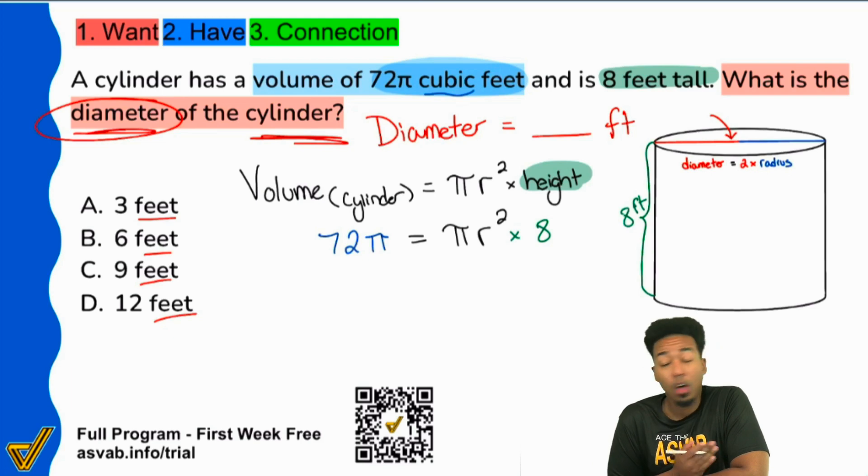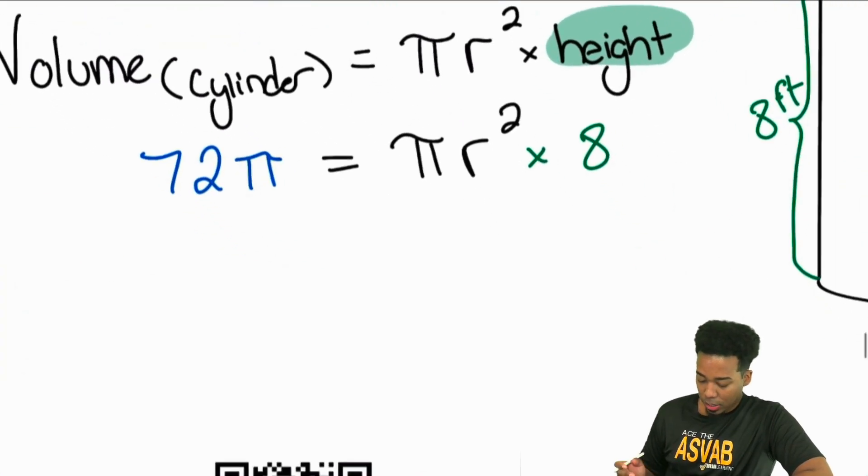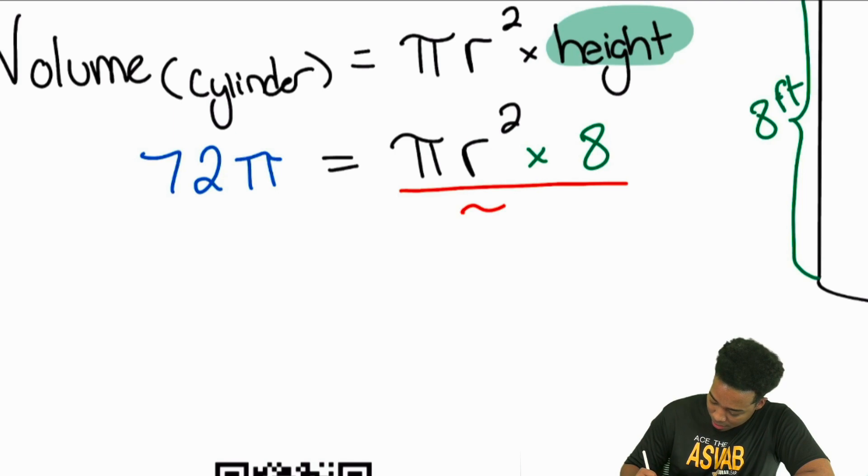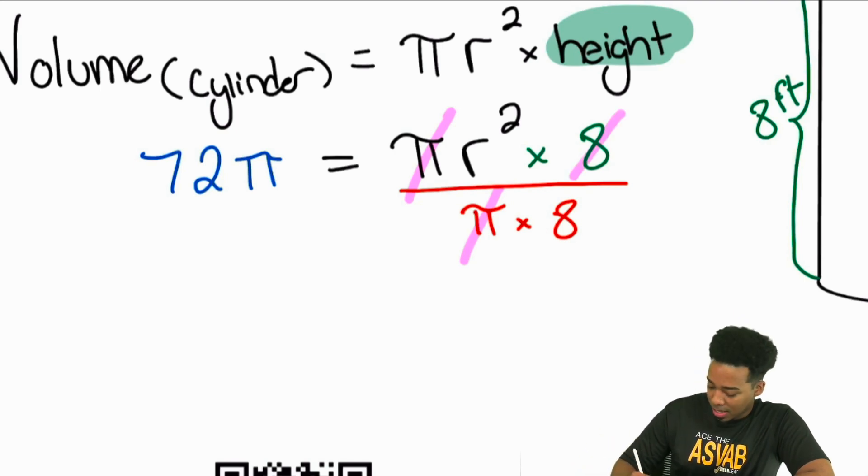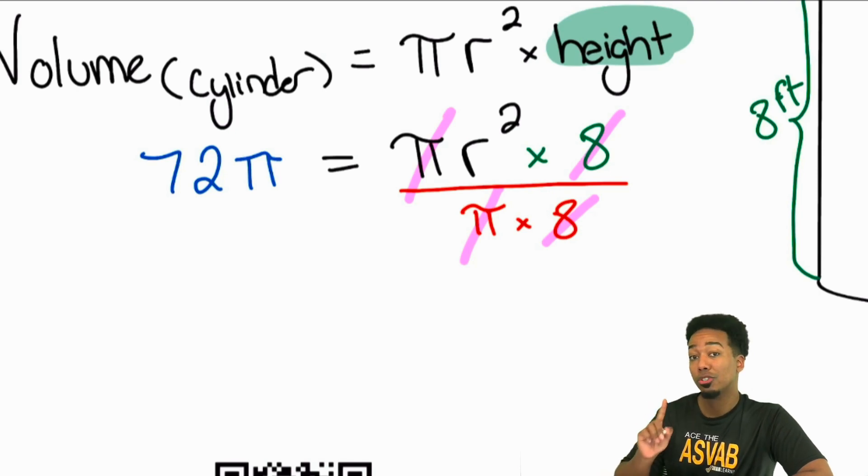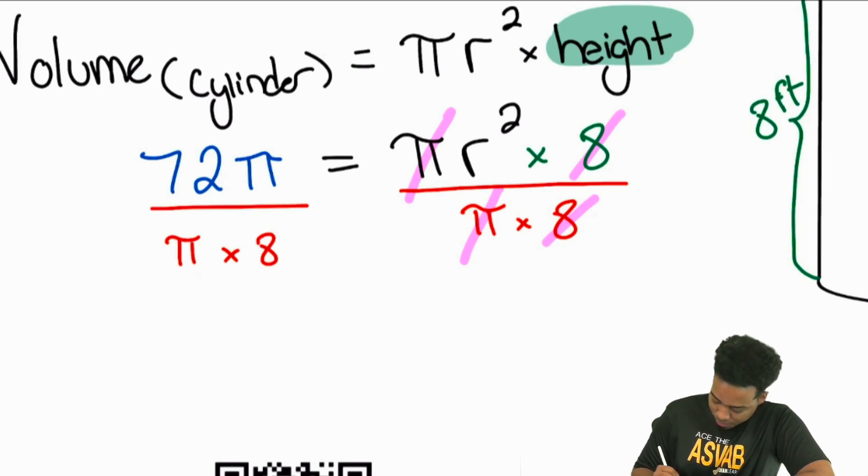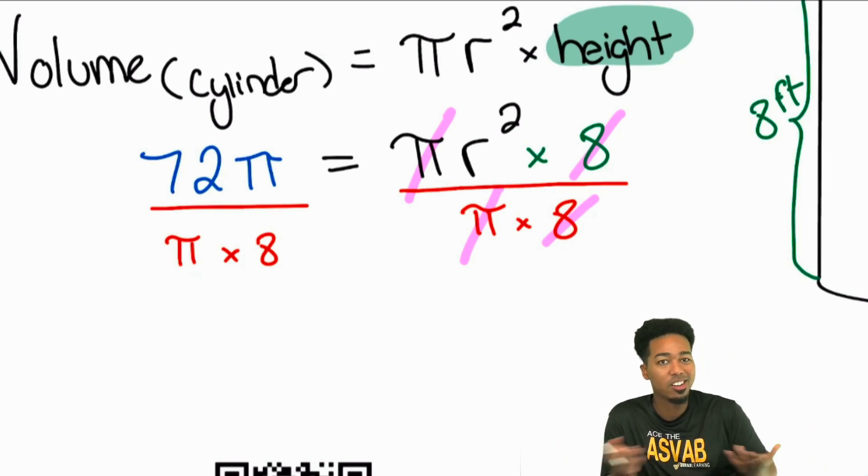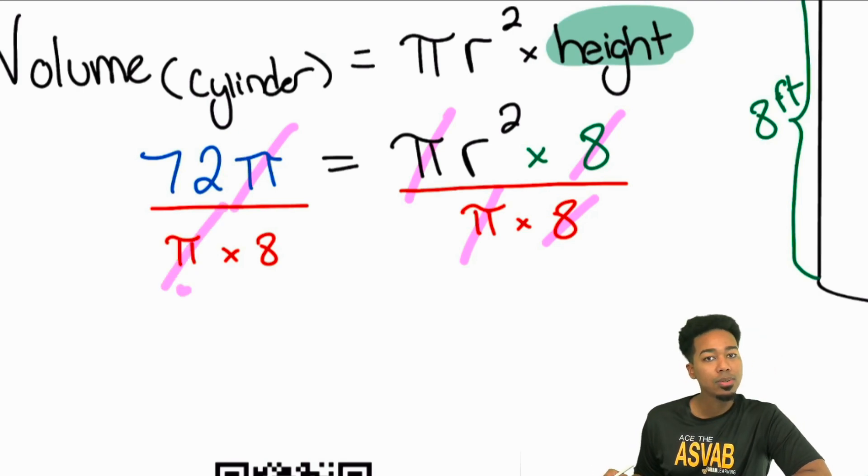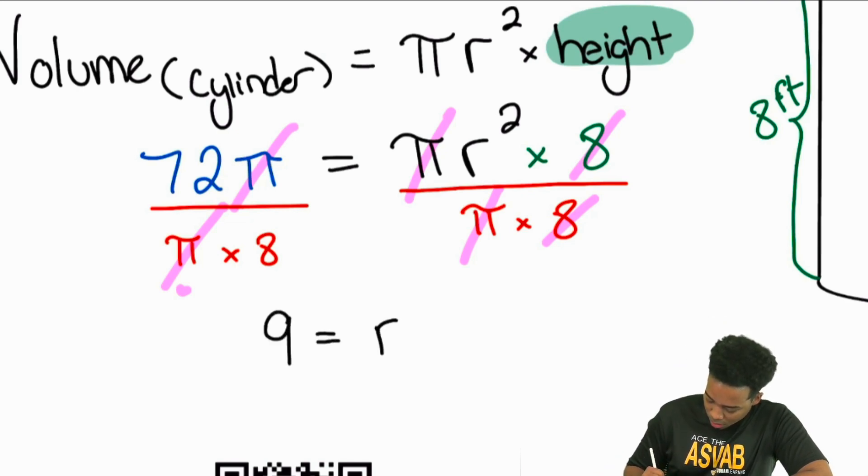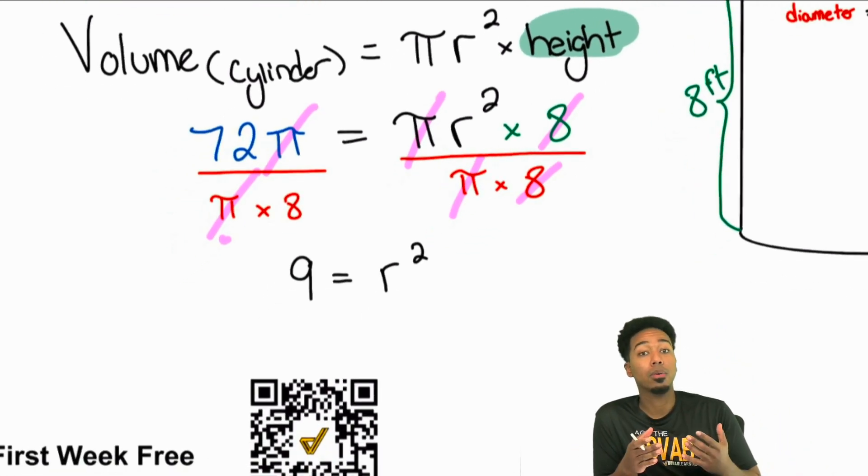So what do we do next? We're just solving an equation from here. Let's take care of this nice and slow. The first thing I notice is that I can actually try to get to the radius by dividing out everything around the r². I can divide out π, and I can divide out the 8. Because if I divide π, it cancels out. If I divide the 8, it cancels out. I just need to make sure I do it also to the other side. We'll divide π and 8. The π's get cancelled out. And then 72 divided by 8 is going to be 9. So we have 9 equals r².